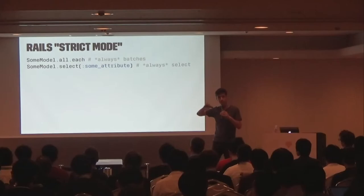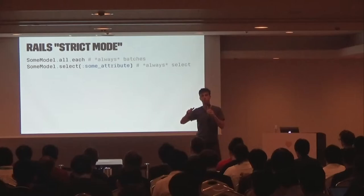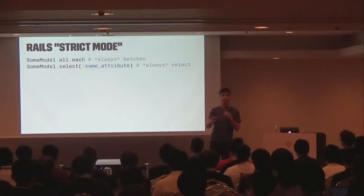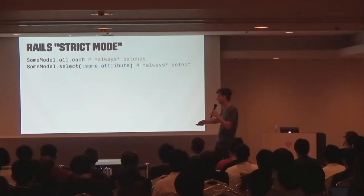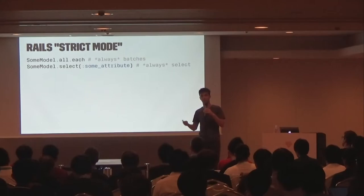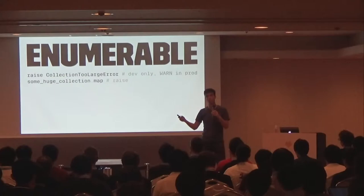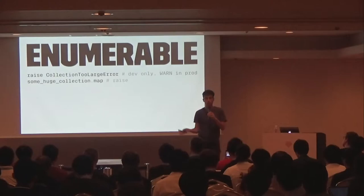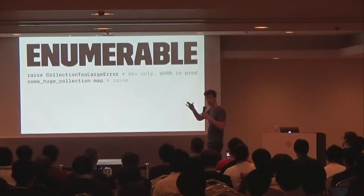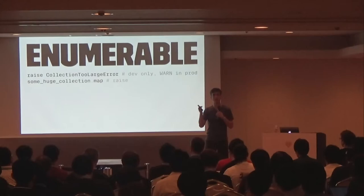Some ideas — I'm not a Rails team member, so this is just spitballing. Maybe we can have a strict mode where we force you to select only the fields that you need, and if you try to access a field that hasn't been selected, we blow up — you always have to use .select in ActiveRecord. Or maybe instead of .all.each always trying to fetch every row, we make it always batch mode with .find_each behavior. Maybe in Enumerable we could raise an exception if you try to create an enumerable with more than a million members — only in development. Maybe we just log. We can do this with Ruby, so maybe it will help make these things more obvious.